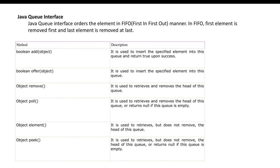The key difference: offer does the same job as add but will not throw an exception if the operation fails. Add will throw an exception. Similarly, poll will not throw an exception when there is no data, whereas remove will throw an exception. Element retrieves data without removing it from the queue.